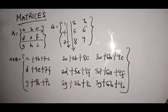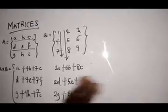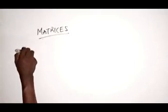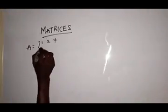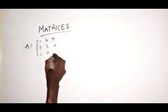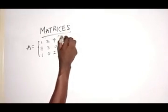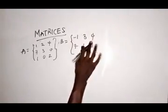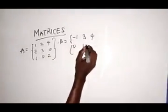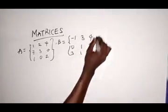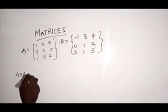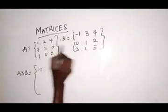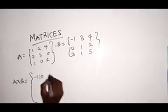Let's look at a concrete example. Let's say I have E equals 1, 2, 4, 7, 3, 0, 1, 0, 2. And my B equals minus 1, 3, 4, 7, 1, 9, 0, 1, 2 — and then 3, 1, 5. I want to do A times B. The same steps apply: 1 times minus 1 is minus 1, plus 2 times 0 is 0, plus 4 times 3 is 12. Then 1 times 3 is 3, plus 2 times 1 is 2, plus 4 times 1 is 4. Then 1 times 4 is 4, plus 2 times 2 is 4, plus 4 times 5 is 20.